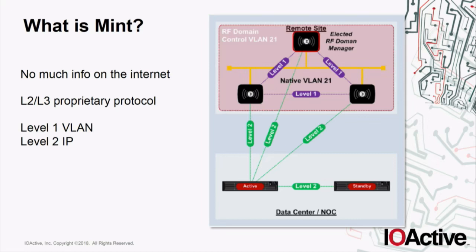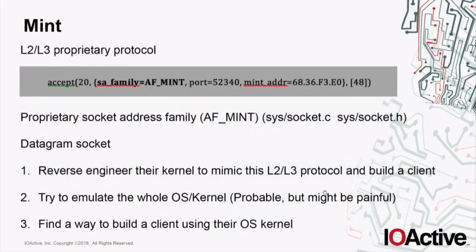MINT is used mainly to communicate devices between themselves — for instance, access points communicating between them through Level 1 MINT, or an access point to a controller through Level 2 MINT, or two controllers through Level 2 MINT as well. When you trace some processes, you can see the non-standard socket address family AF_MINT, the port, and the MINT address — which is the four last bytes of the MAC address. They created their own proprietary socket address family in their kernel, using datagram sockets. The goal here is to create a client so we can communicate with other devices using MINT.